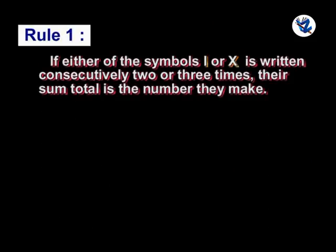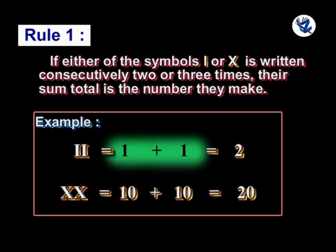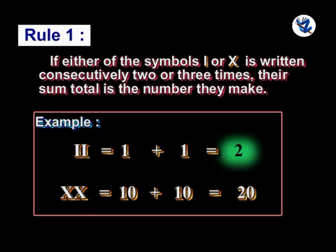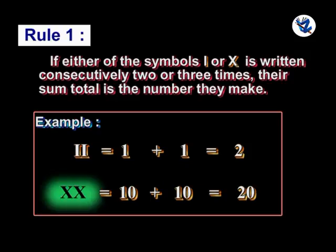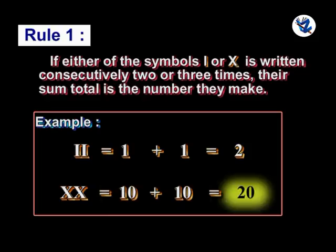Rule 1: If either of the symbols I or X is written consecutively 2 or 3 times, their sum total is the number they make. For example, I, I, I is equal to 1 plus 1 plus 1, which equals 3; and X, X is equal to 10 plus 10, which equals 20.